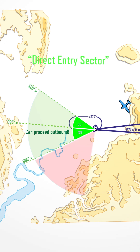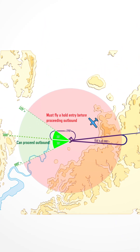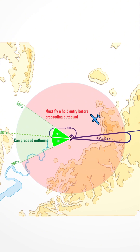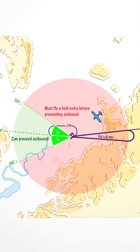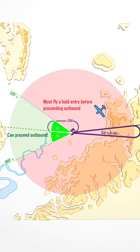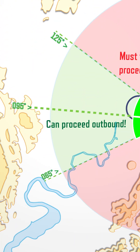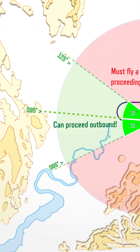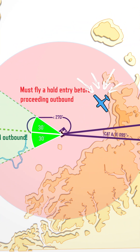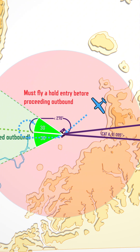If you arrive from outside this sector, you are required to fly a hold entry to enter the associated hold, to then be able to continue outbound from within this sector. In this case, for a track of 095 outbound, arrivals from QDR 065 to 125 can continue outbound. Here we are arriving from the northeast, outside of this sector, and must fly a parallel entry before we can go outbound on the base turn procedure.